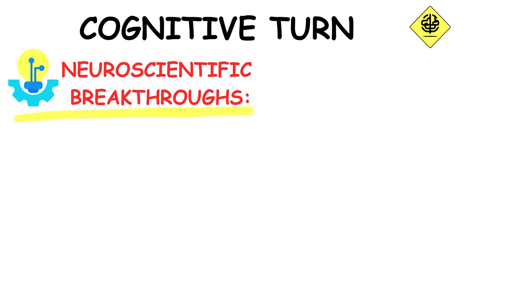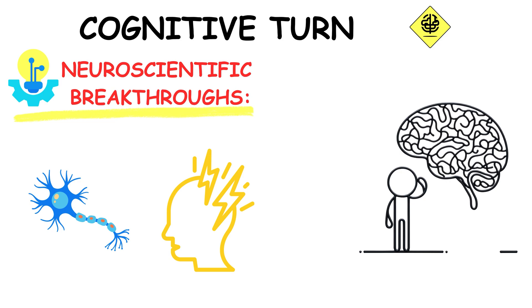Neuroscientific breakthroughs and advancements in brain science have illuminated how our biology creates consciousness. Researchers now study the brain's structures and functions, striving to link them directly to the phenomena of thoughts, feelings, and self-awareness.